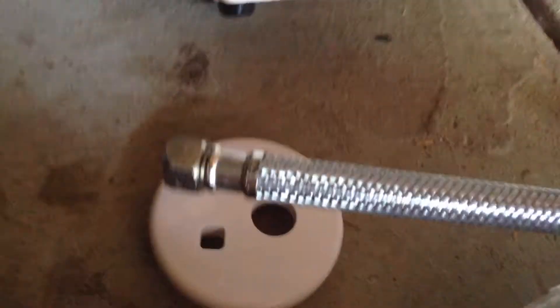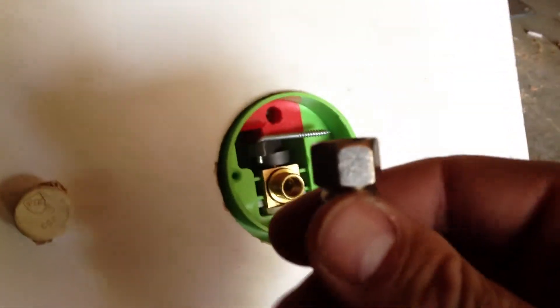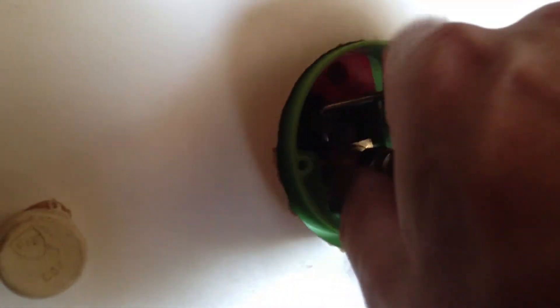You'll take your supply line and feed it through the supply hole on the escutcheon and make your connection to the box.